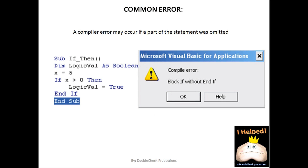One of the most common errors you're going to come across when working in Visual Basic for Applications with if-then statements is that people often forget to put the End If statement at the end. So notice we have the beginning of our conditional statement — If — then we go through, and we always want to make sure we put End If. Everything the code runs is contained between If and End If.